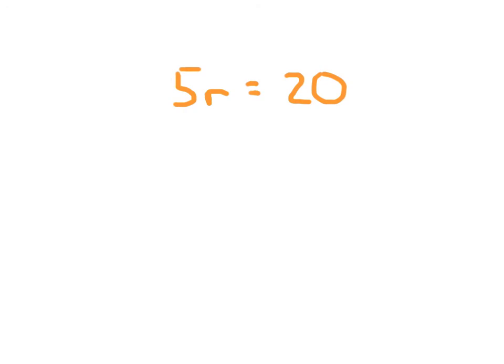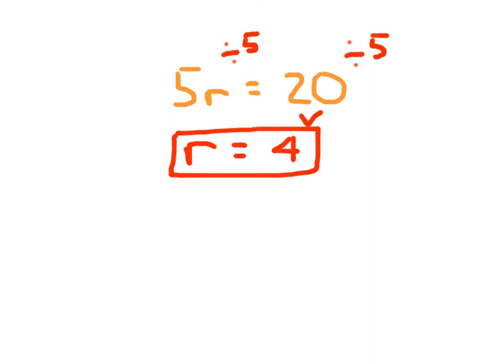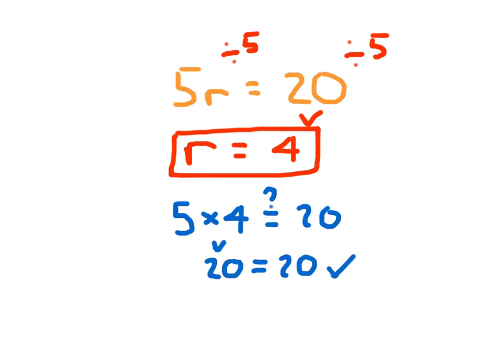Here we have the equation 5R equals 20. That's 5 times R, so we divide both sides by 5. 5 times R divided by 5 just leaves us with R. 20 divided by 5 is 4, so R equals 4. Check work: does 5 times 4 equal 20? 5 times 4 is 20, so 20 equals 20.